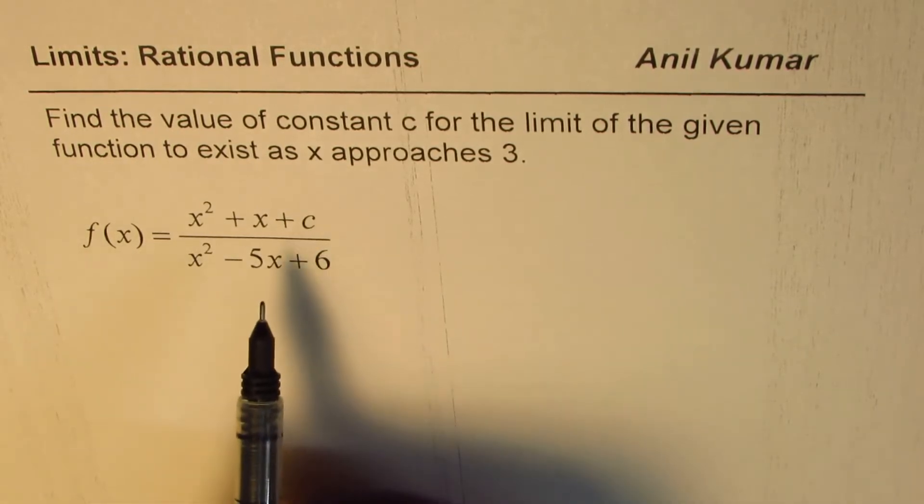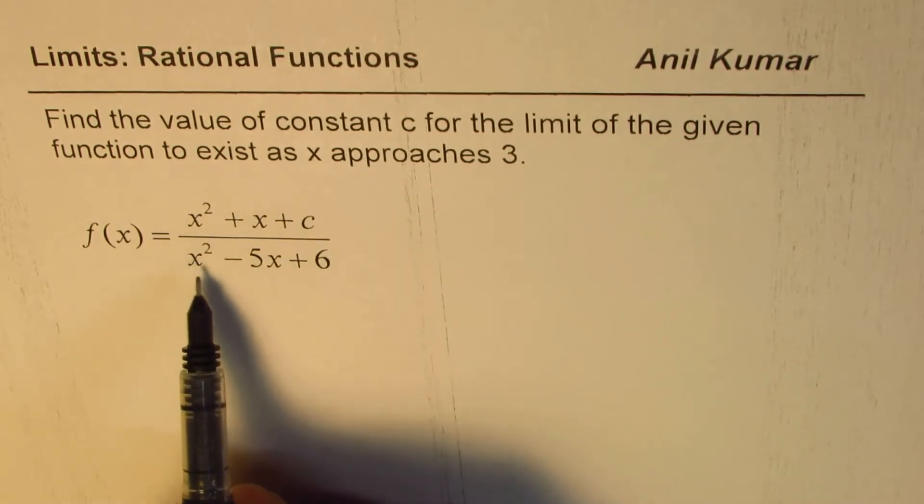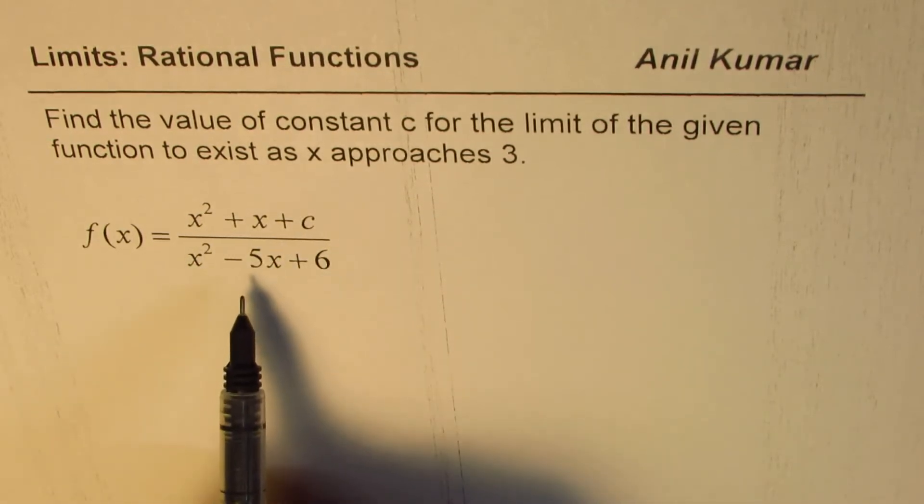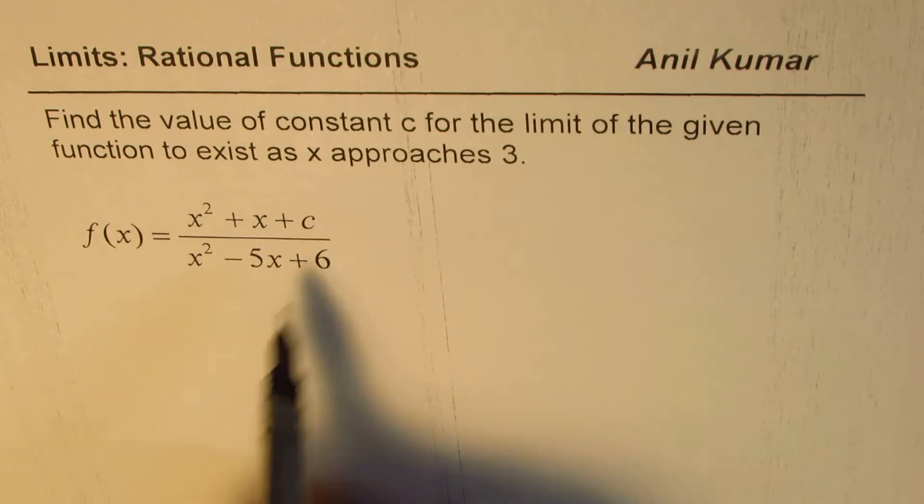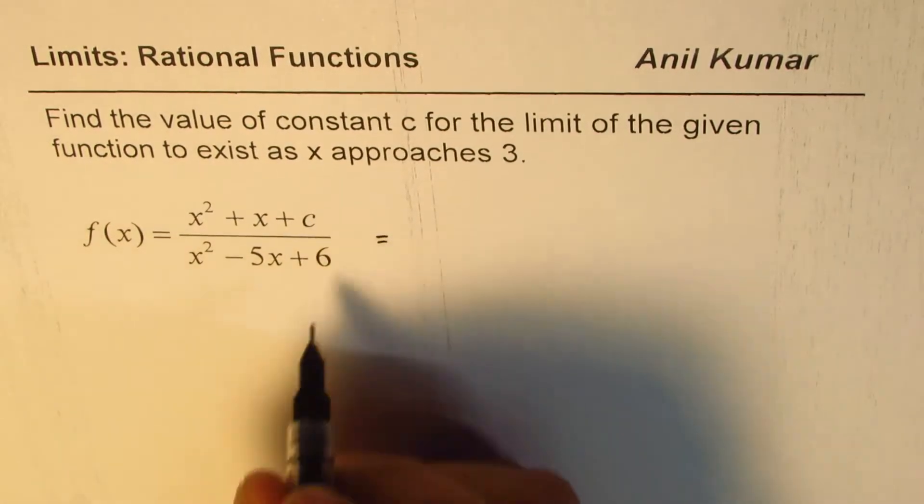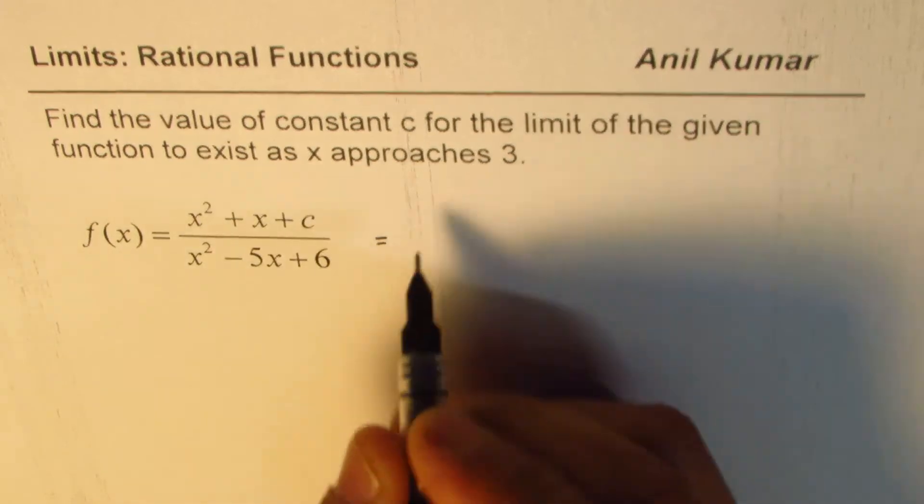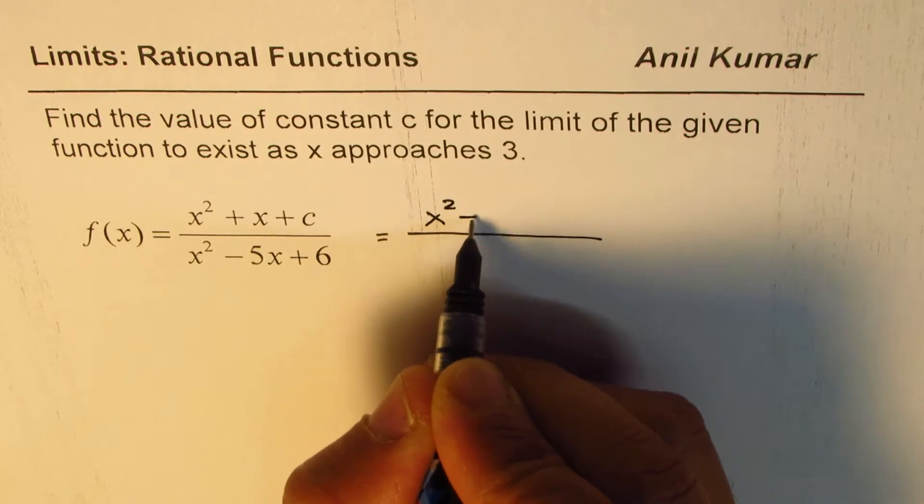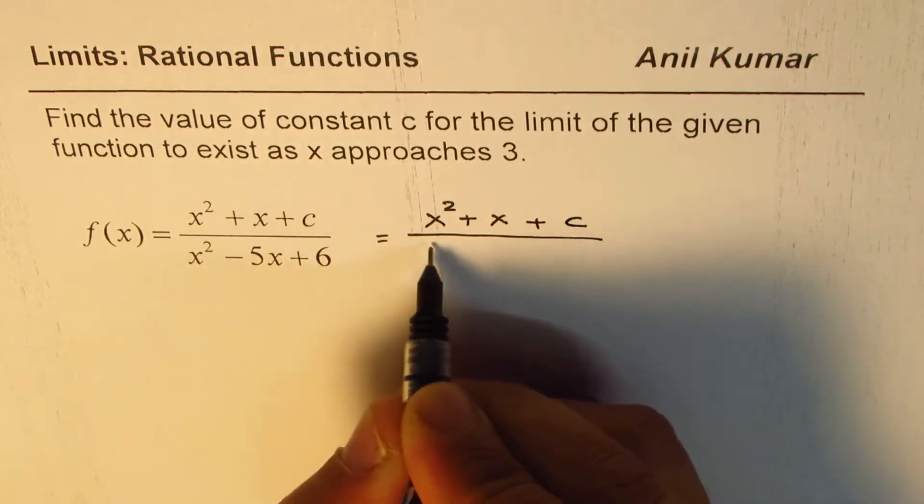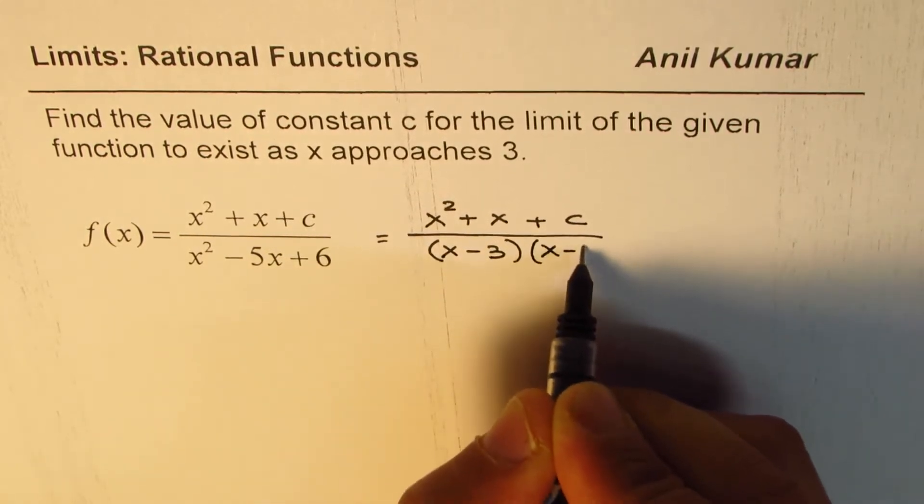Now let us see whether the limit exists at 3 or not. For that, we can actually factor the denominator and then analyze. Denominator is x squared minus 5x plus 6. We could factor using product and sum. Product of 6, sum of minus 5. Both negative 3 and 2 will give us the factored form. So we could write this as x squared plus x plus c over x minus 3 times x minus 2.